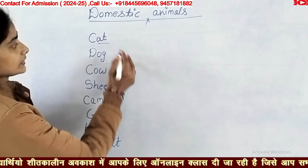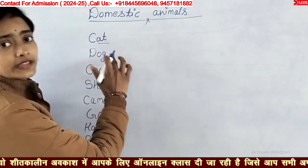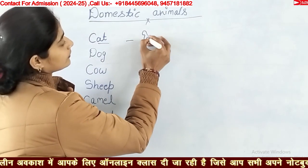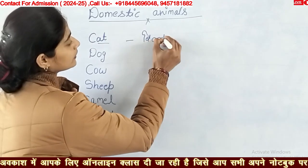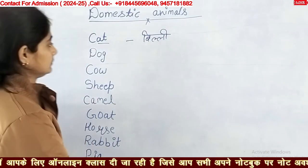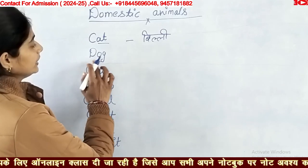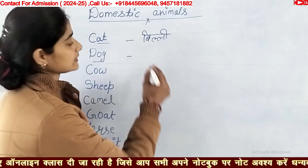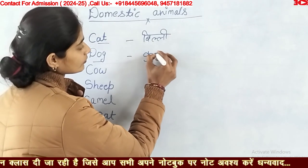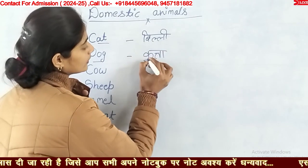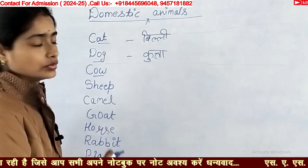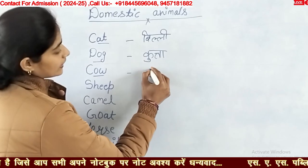Cat — C-A-T — cat means billi. Dog — D-O-G — dog means kutta. Cow — C-O-W — cow means gaay.